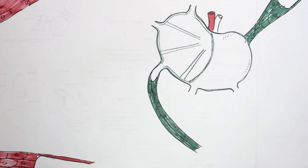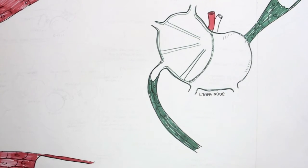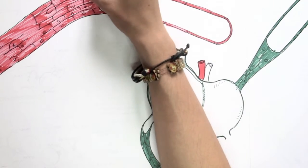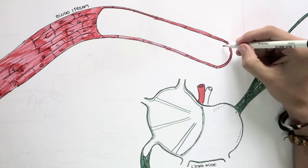Such as above here, we have a lymph node. This is a lymph node. And here is a bloodstream. And the immature B cell will migrate into the lymph node through the lymph node artery.